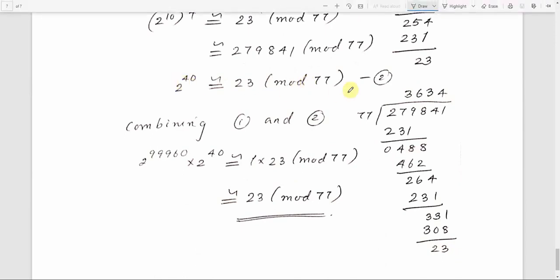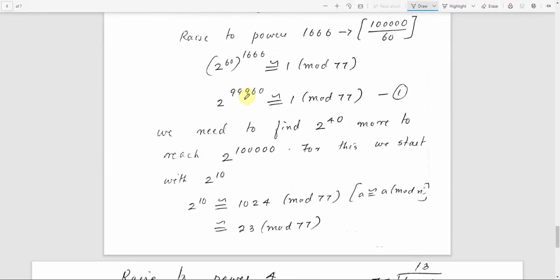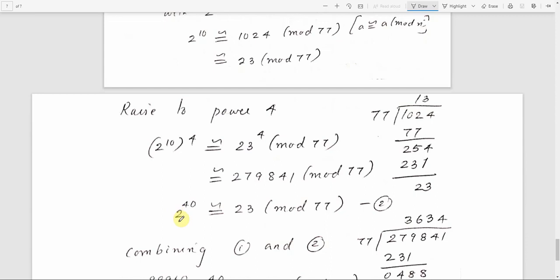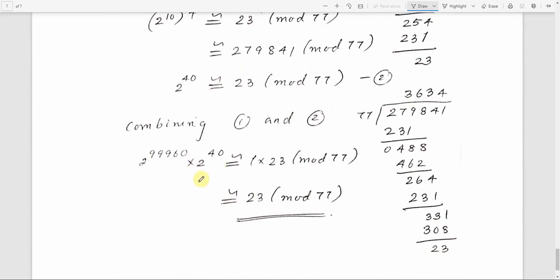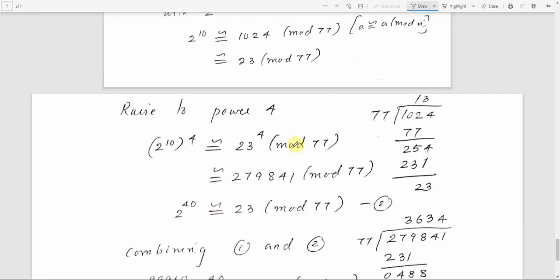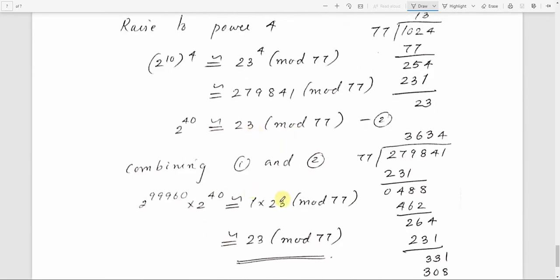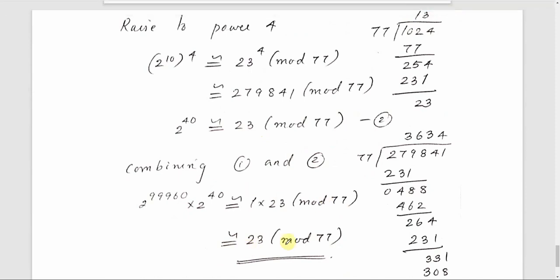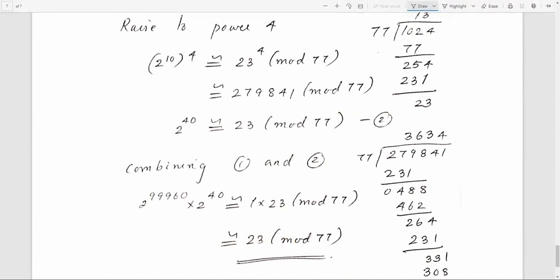Now 2 raised to 40 is congruent to 23 mod 77, and 2 raised to 99960 is congruent to 1 mod 77 from Euler's theorem. The exponent 10...0 (50 zeros) equals 99960 times 40 plus some remainder, giving 2 raised to (10...0) congruent to 1 times 23 mod 77, so the answer is 23 mod 77. These are the problems related to Euler's theorem. Thank you.